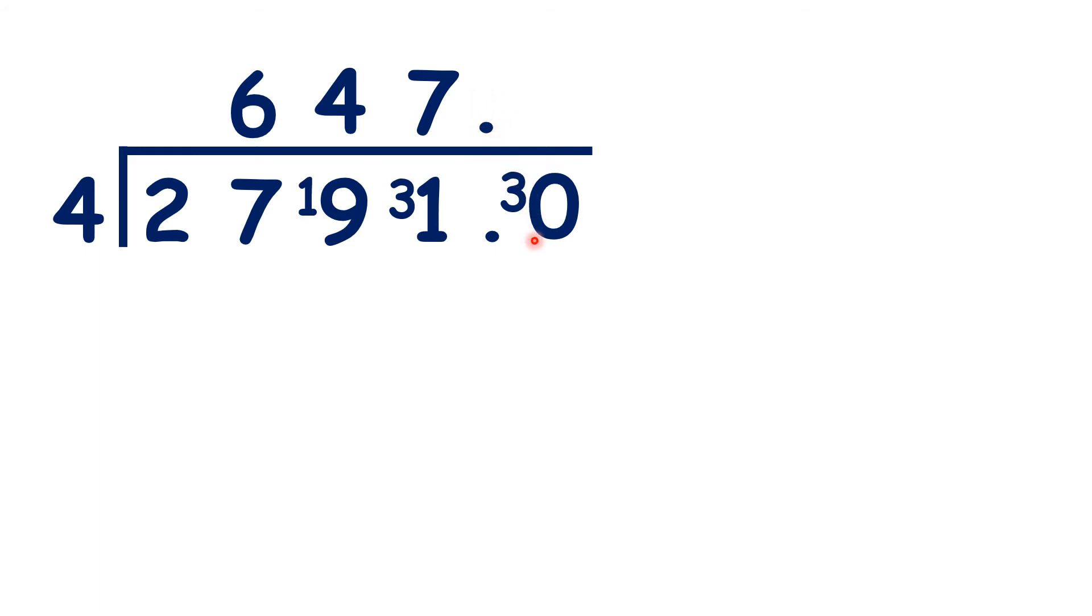So now 30 divided by 4 is 7 remainder 2. But what can we do with that remainder 2? Well, we now need a hundredths digit. And we can do that because 2,791.00 is the same as 2,791.